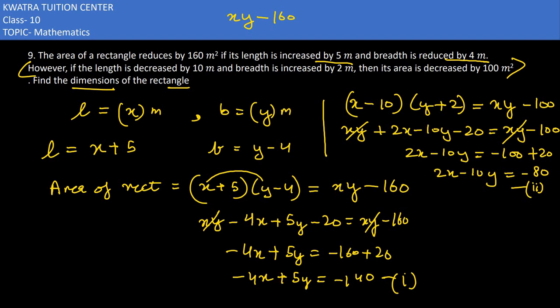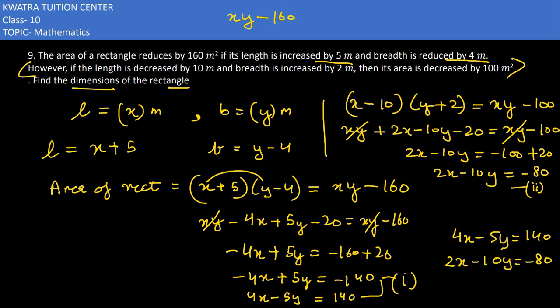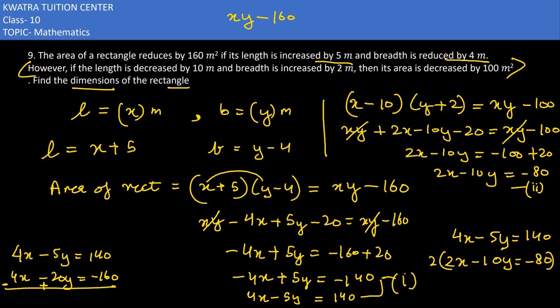First, let's change the sign of the first equation: it becomes 4x - 5y = 140. Now multiply the second equation by 2 to get 4x - 20y = -160. We now have: first equation 4x - 5y = 140, and second equation 4x - 20y = -160. Subtracting eliminates 4x.